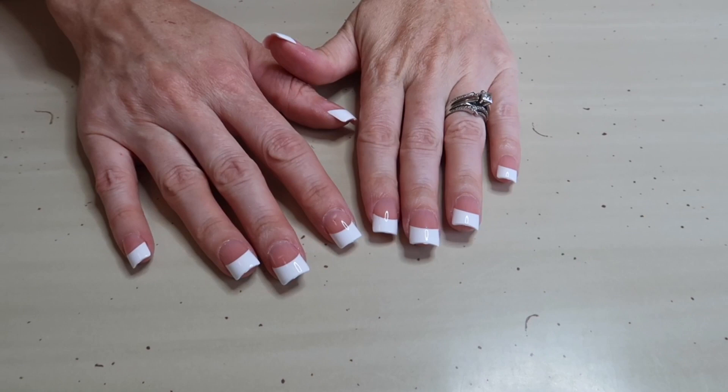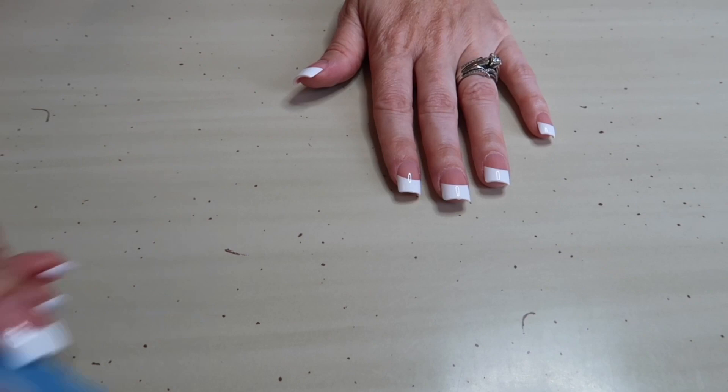And once you have all of them on, then you can take those little tabs off the end. Those just pull right off and this is what it's going to look like once you take the tabs off. Now there will be these little plastic pieces on the very ends where you have pulled those tabs off and you're going to want to file those off.